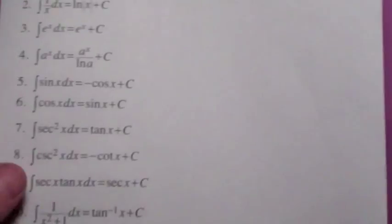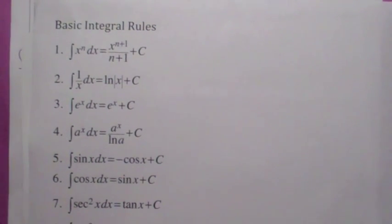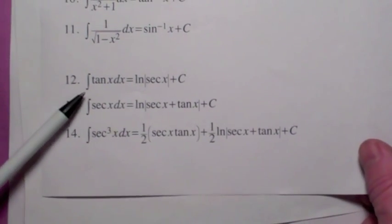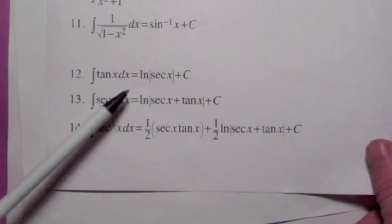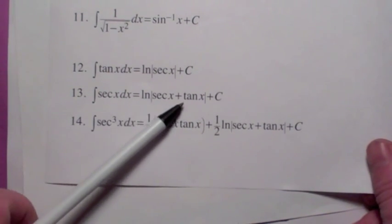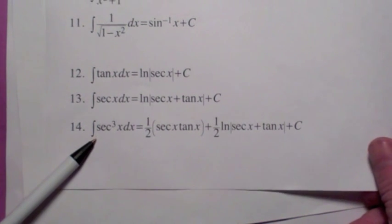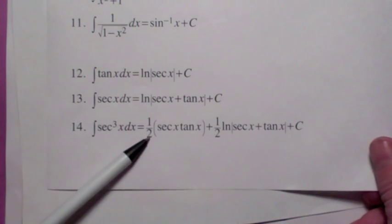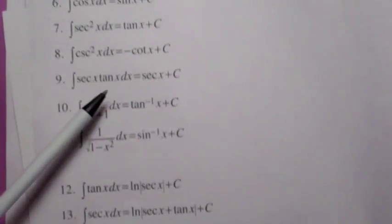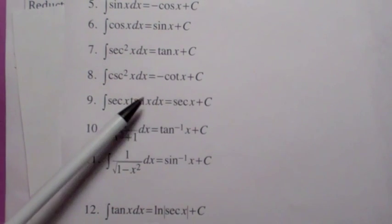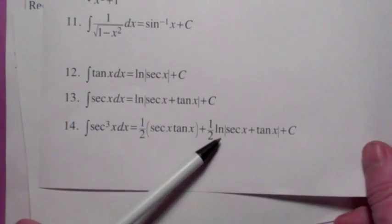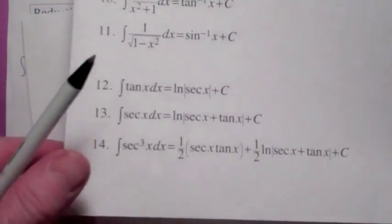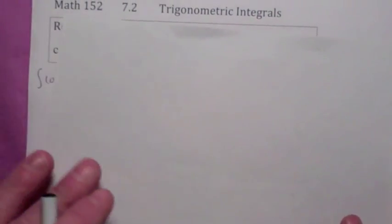Before we get into that, I was talking about this handout—this list of formulas that you should know. These are all the basic ones from last time. Especially want to focus your attention on those last three. The integral of tangent comes up a lot: ln of secant. The integral of secant is ln of secant plus tangent in absolute values. The integral of secant cubed is one-half secant tangent—remember secant tangent is the derivative of secant—plus one-half the ln of secant plus tangent, which is the integral of secant. So you should probably learn those last three.